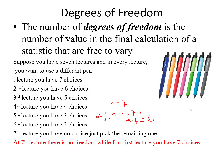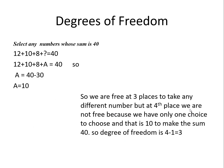I will discuss another example to further clarify the meaning of degree of freedom. Suppose you select any four numbers whose sum is 40. We can choose, for example, 12 plus 10 plus 8. What will be the fourth number? Since N equals 4 and the sum must equal 40, the fourth number A equals 40 minus 30, which is 10.